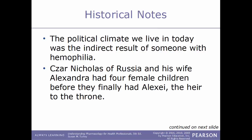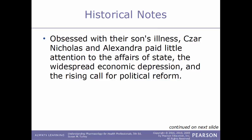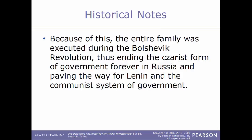This chapter ends with a historical note. The political climate we live in today was indirectly the result of someone with hemophilia. Czar Nicholas II of Russia and his wife Alexandra had four female children before finally having Alexei, their heir to the throne. Alexei had hemophilia because his mother was a carrier of the hemophilia gene and was frequently near death. Obsessed with their son's illness, Czar Nicholas and Alexandra paid little attention to Russia's affairs of state, leading to a call for political reform. The entire family was executed during the Bolshevik Revolution, ending the Czar's form of government and paving the way for Vladimir Lenin and communism.